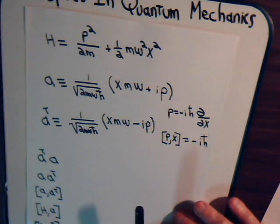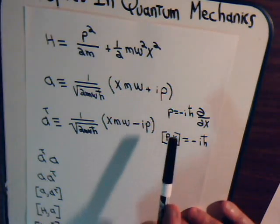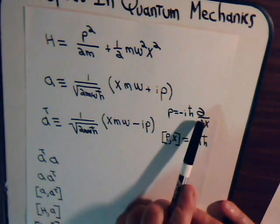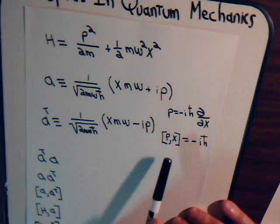Remember now in quantum mechanics, and we're just restricting our attention to the x-axis, the momentum is minus i h-bar, given the partial of something with respect to x.